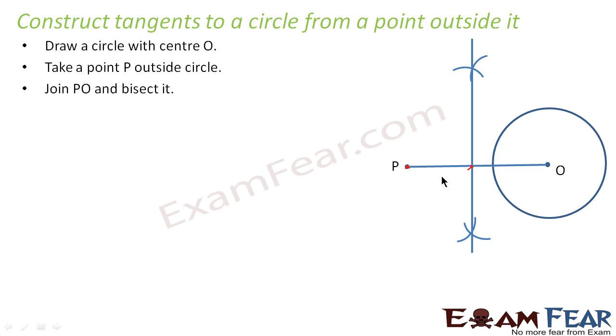To bisect any line, from this point you take a compass and draw like this. From this point, you take a compass and draw like this. Again from this point, you draw a compass like this. And from this point, you draw like this. So you get these two points, you join, you get this as the midpoint. So you got the midpoint. And let M be the midpoint of PO.